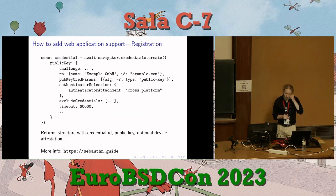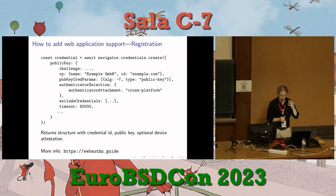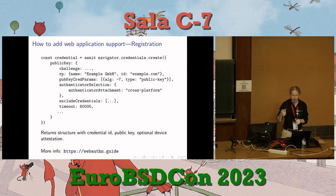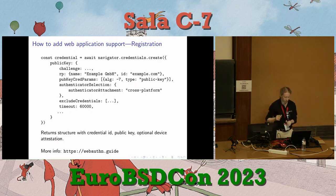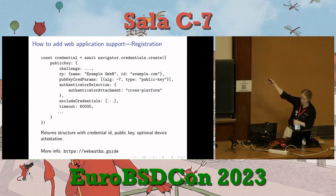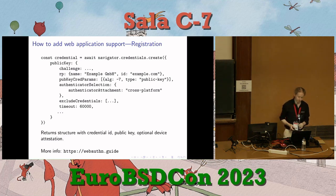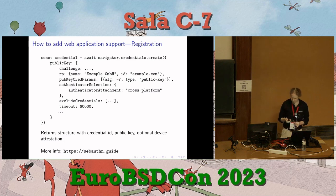If you want to add FIDO support in a web application, you use the WebAuthn API — just a JavaScript function, navigator.credentials.create, with some parameters. There's a magic constant that says you'll accept an ECDSA key. It's not that complicated once you get started. There's a mechanism to exclude credentials so you don't let a user re-register an existing key — that same mechanism can detect if the same key is used for two different accounts. More information is available at webauthn.guide.